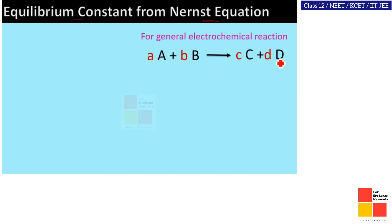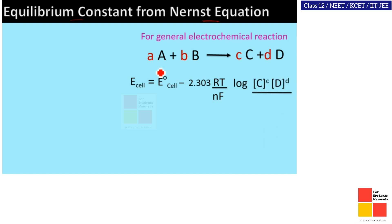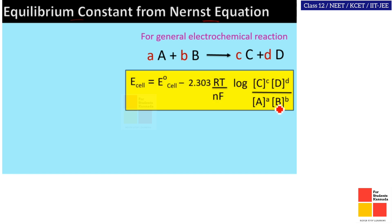In this video, we will see the number of moles. The next equation we will see is: E cell is equal to E naught cell minus 2.303RT divided by nF, log of the product multiplied by the number of moles raised to the power of the moles. This is the general Nernst equation.